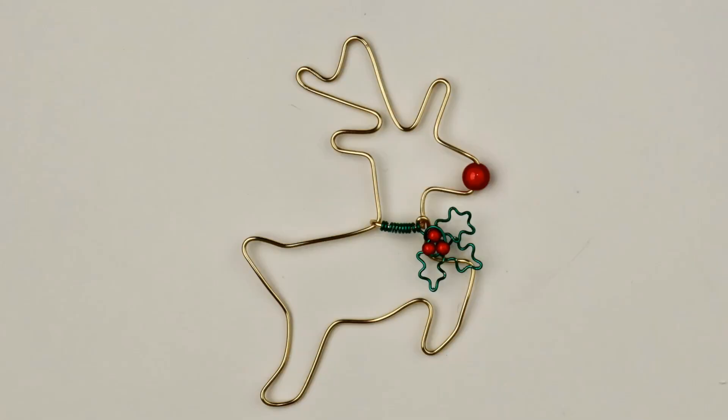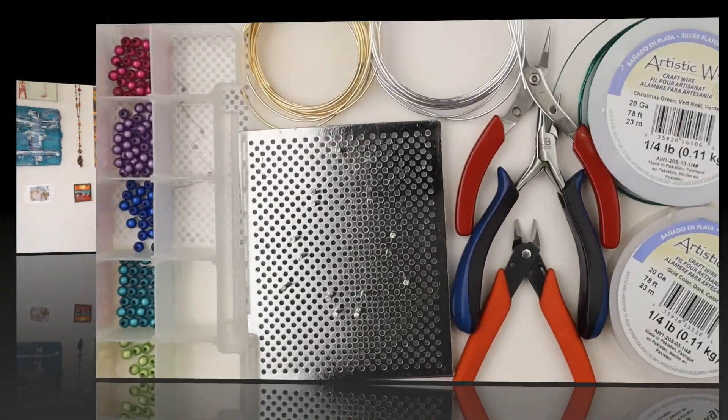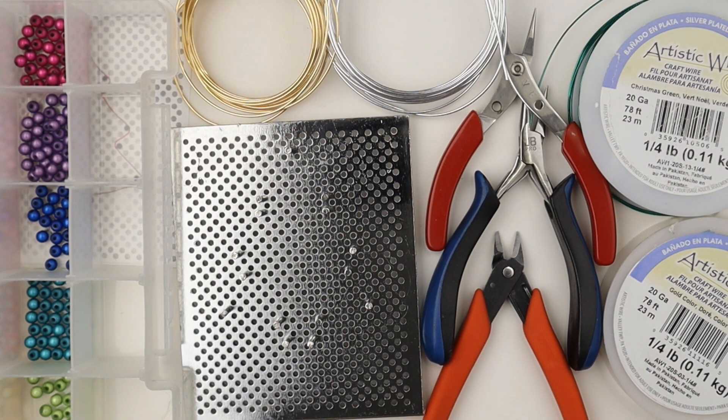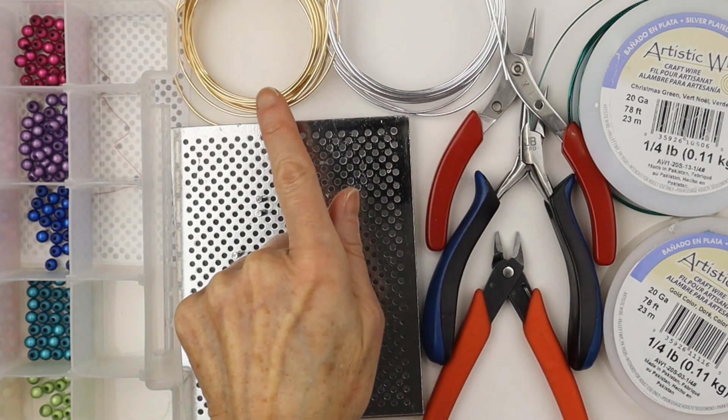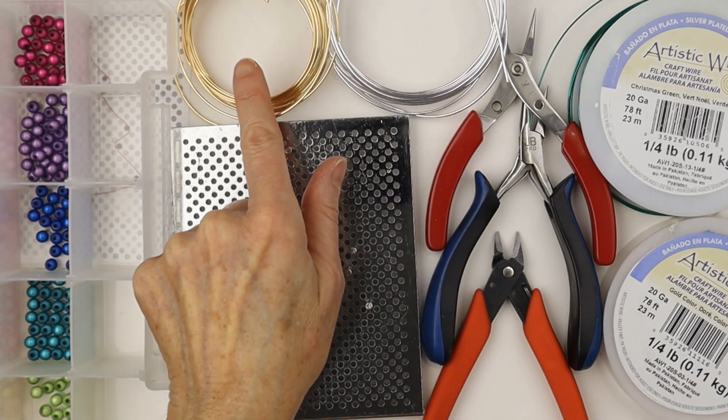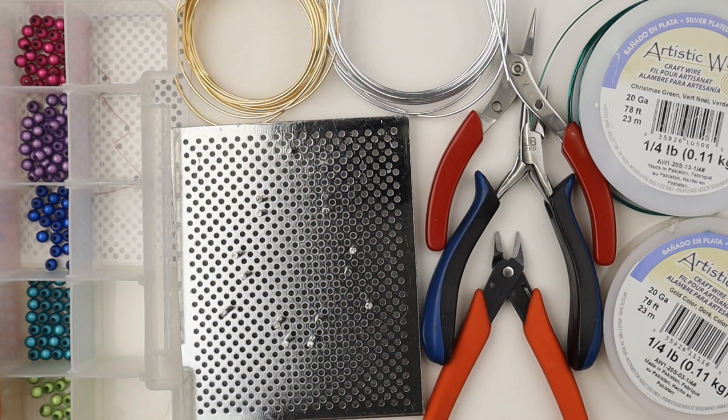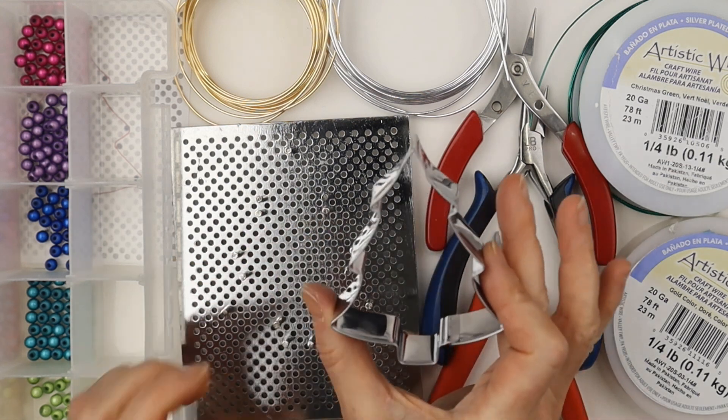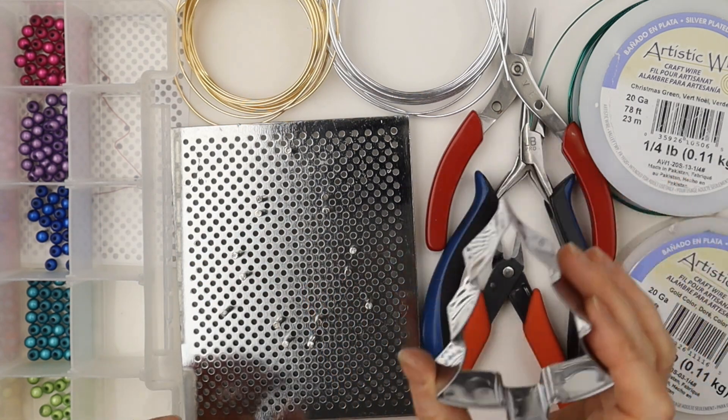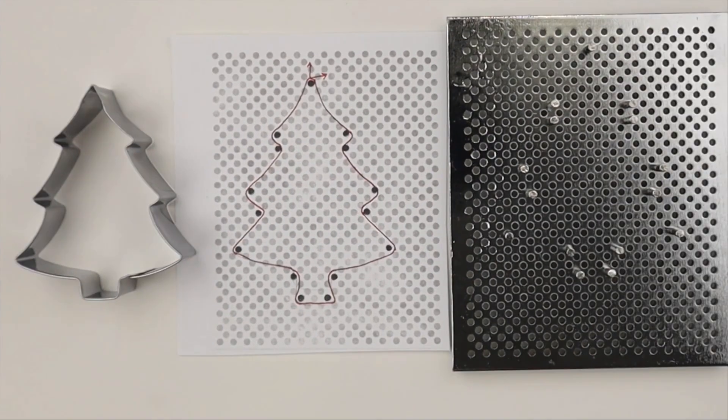I've done a video on my channel making a reindeer ornament using the same technique. So without further ado, cheers to Wendy and enjoy the tutorial. You can use a jig for this project or freeform the outside shape of the tree. You're going to need your tools, some different sizes wire. I have 16 gauge and 1.5 millimeter wire for the outside and a variety of beads. Here you can get a cookie cutter to trace the shape of the tree.